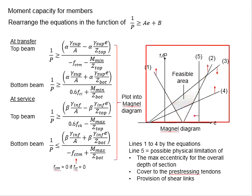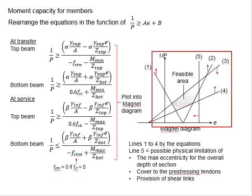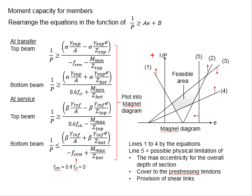The Magnel diagram is made of several straight lines, which defines the boundaries based on the stress limits of different conditions. Exceeding the boundaries will result in failure of the respective conditions. The feasible area will be the regions that fulfill all the boundary conditions.